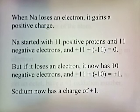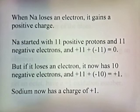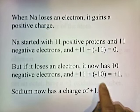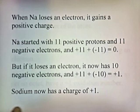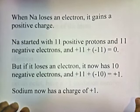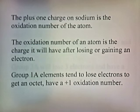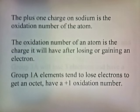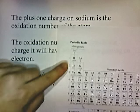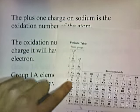When sodium loses an electron, it gains a positive charge. Sodium started with 11 positive protons and 11 negative electrons, giving a charge of zero. But if it loses an electron, now it has 10 negative electrons: 11 positive protons plus 10 negative electrons equals positive 1. So when losing an electron, sodium now has a charge of positive 1. The plus 1 charge on sodium is the oxidation number of the atom — the charge it will have after losing or gaining an electron. Group 1A elements tend to lose electrons to get an octet and have a plus 1 oxidation number.